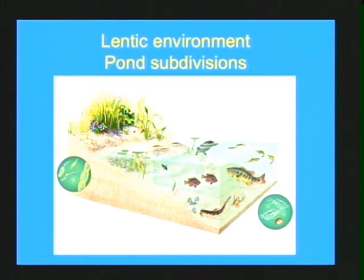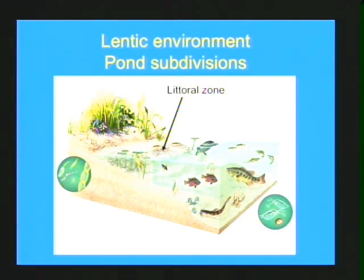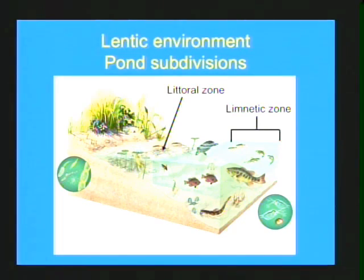Let's first look at the lentic environments. Looking at a pond, you'll find that it has two major divisions. The first being the littoral zone — that is the area of highest productivity where you find the plants. It gets more sunlight which provides more food and habitat for aquatic invertebrates. The second section is the limnetic zone, the more open water where you find the fish. On the benthos of the deeper waters you may find clams, snails, and crayfish.